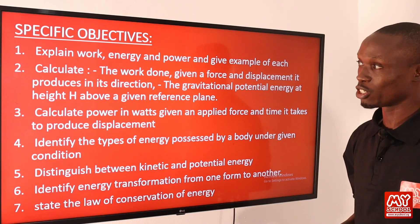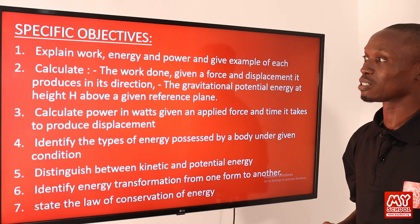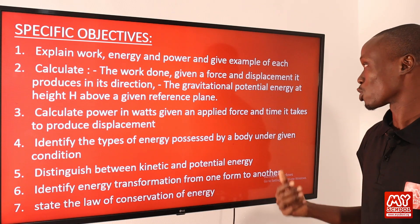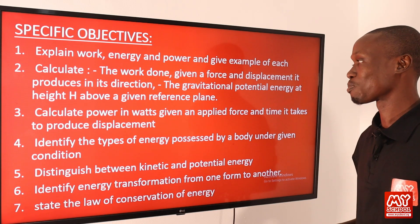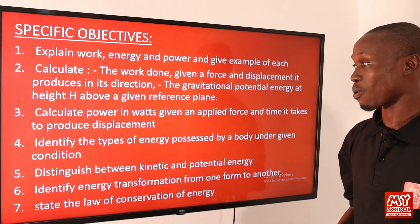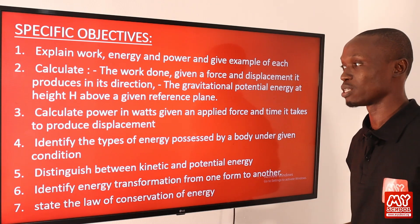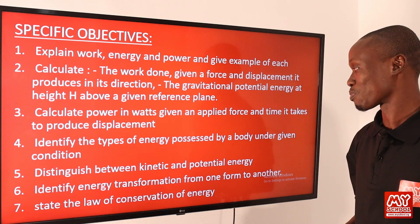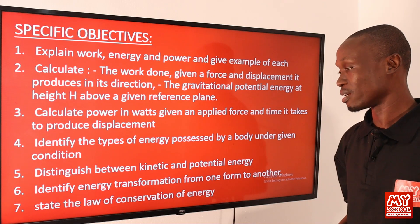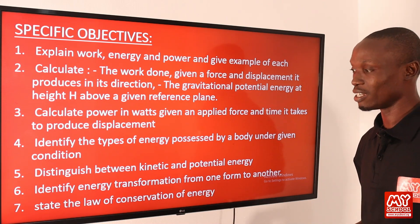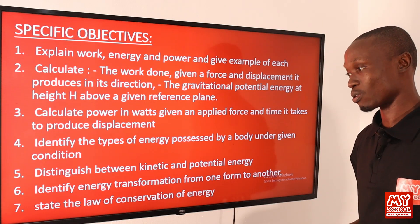The objectives include: to calculate the work done given a force and displacement it produces in its direction; to calculate the gravitational potential energy at height h above a given reference plane; to calculate power in watts given an applied force and the time it takes to produce displacement; to identify the types of energy possessed by a body under given conditions; to distinguish between kinetic and potential energy; to identify energy transformation from one form to another; and to state the law of conservation of energy.